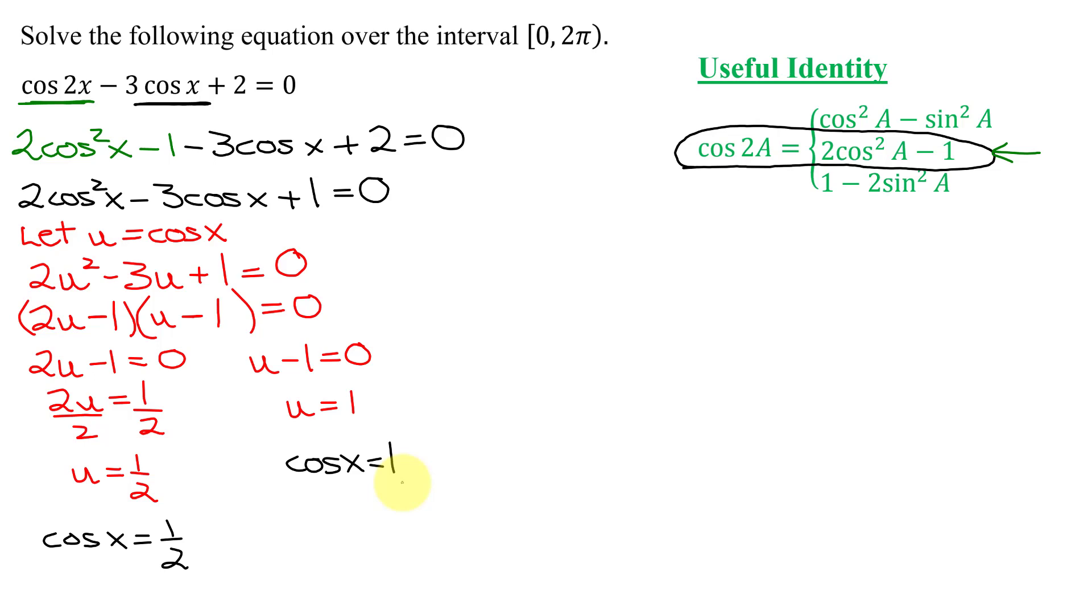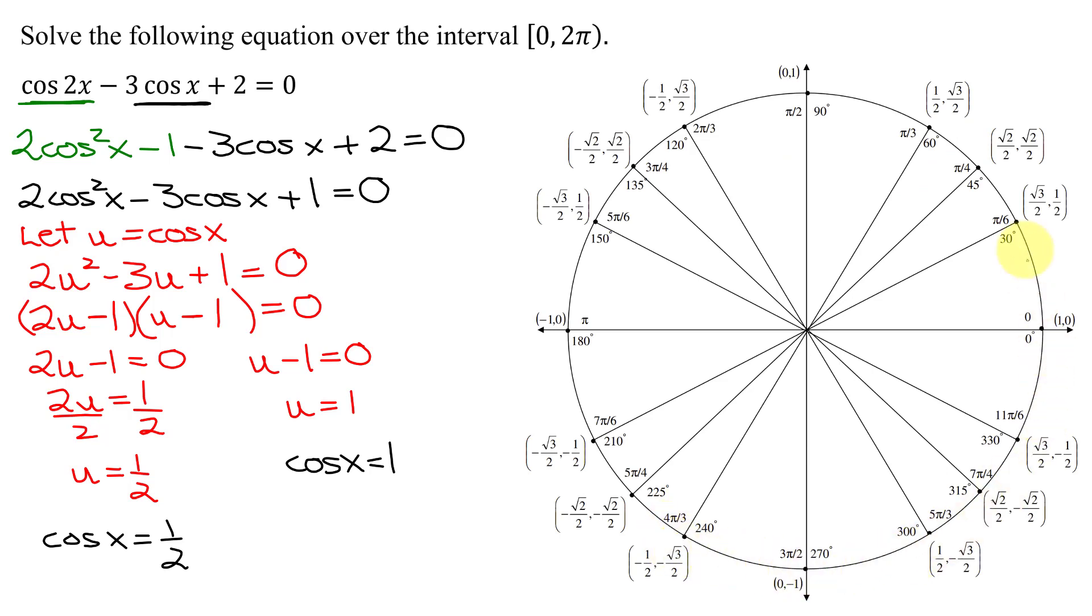So now we need to get our unit circle. So here is my unit circle. And on the unit circle for each ordered pair, the x coordinate is the cosine of my angle and the y coordinate is the sine of my angle. So I'm looking for x coordinates that equal positive 1 half. So that means I have to be in quadrant 1 and quadrant 4. Here my x coordinate is positive 1 half at π over 3, and it's also equal to positive 1 half at 5π over 3.